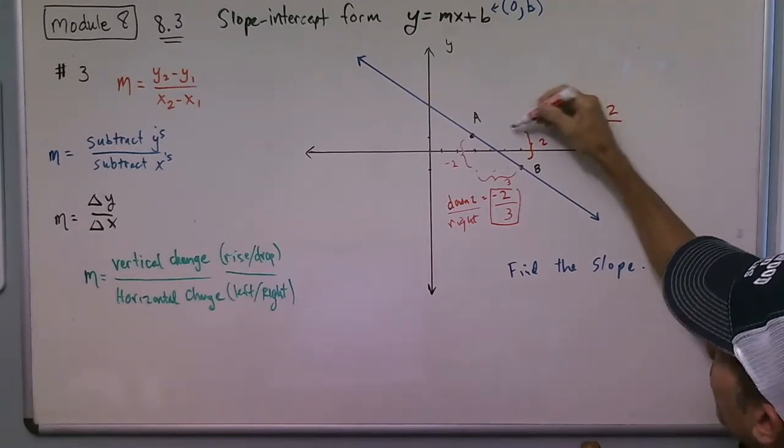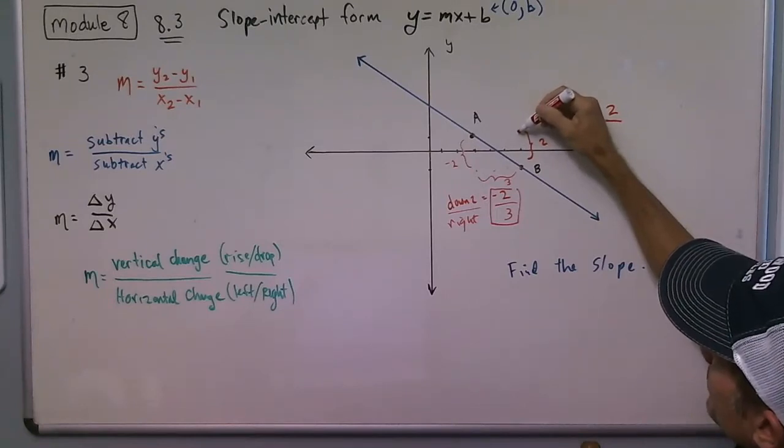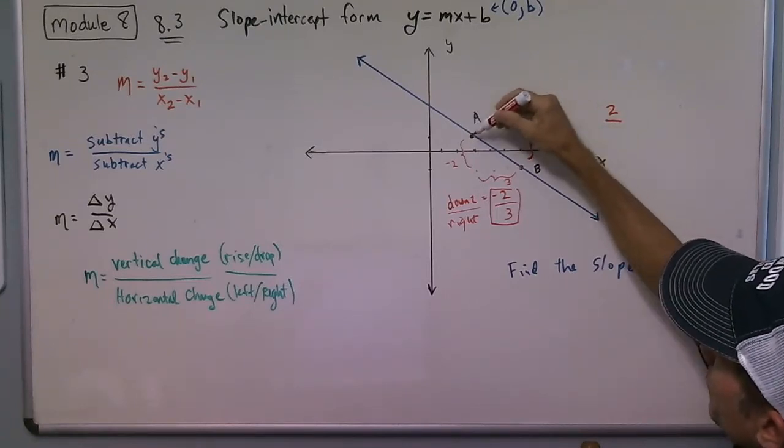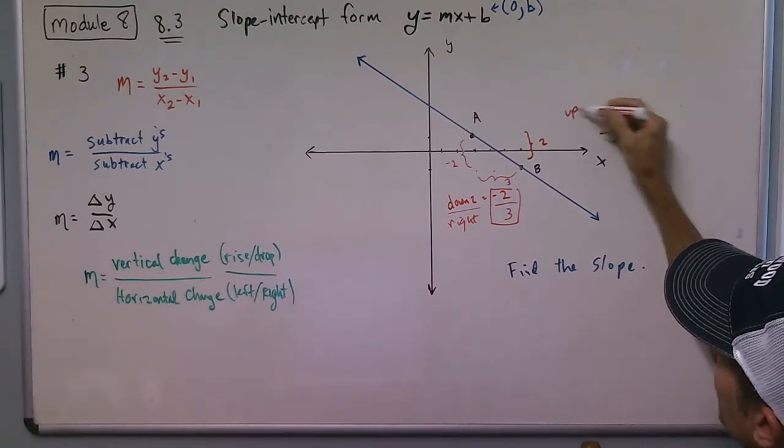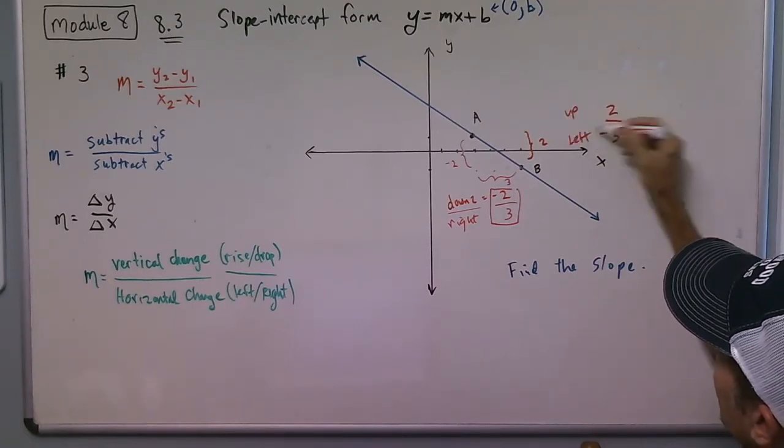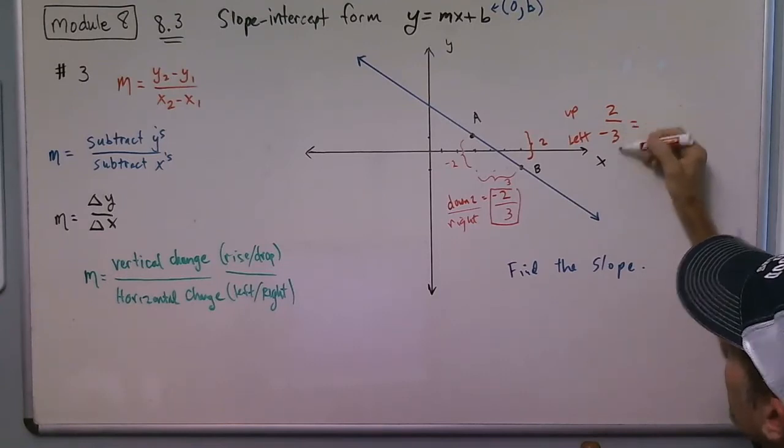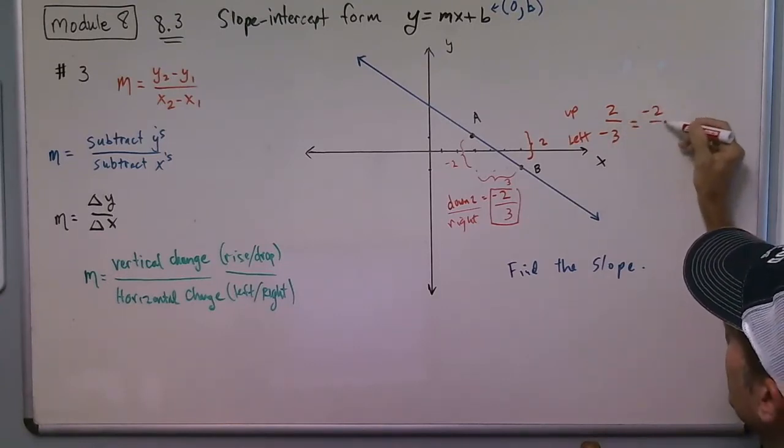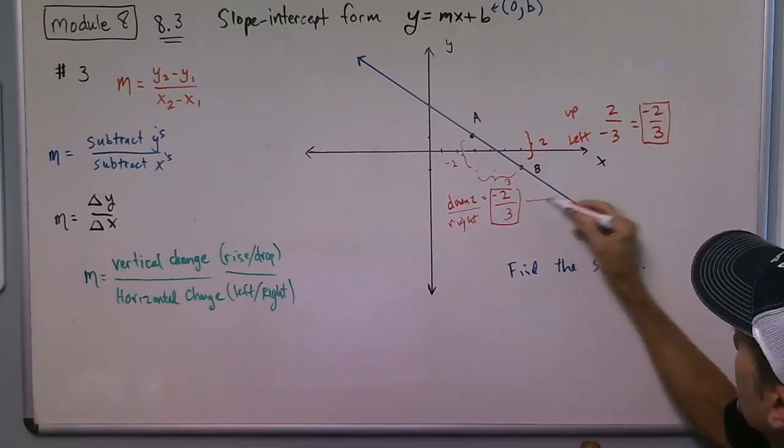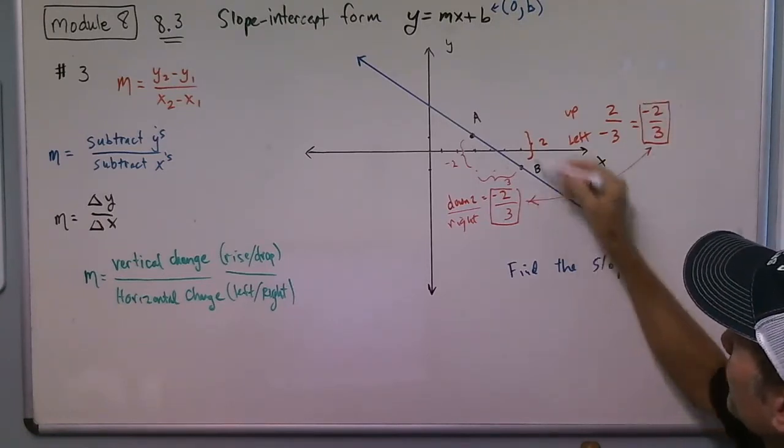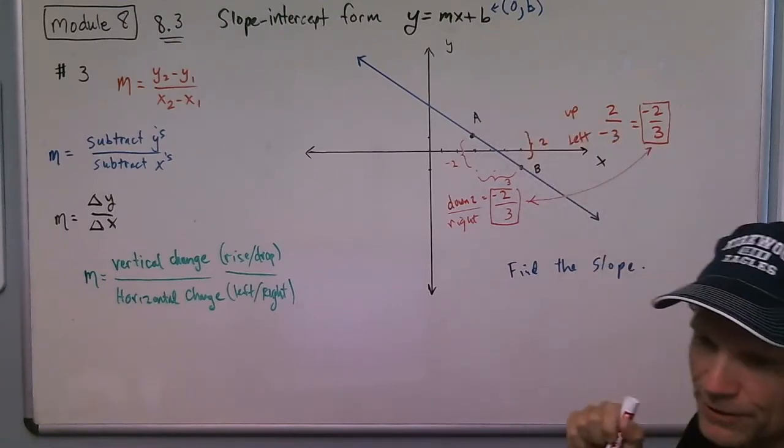And then I went back or to the left, let's see, 1, 2, 3. So I get up and left and I get 2 over negative 3. But we've talked about many times it's best to put your negative up top, and you get negative 2 thirds. So you see, you get a matching slope no matter whether you start counting at A or start counting at B.